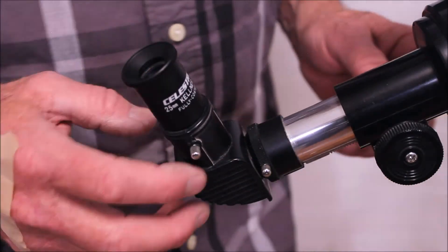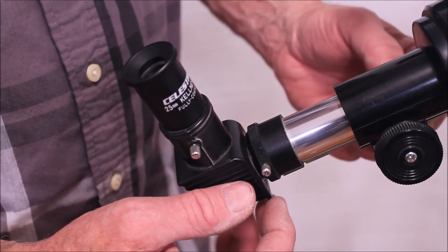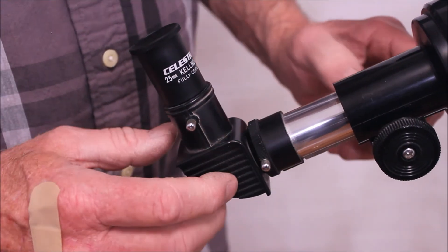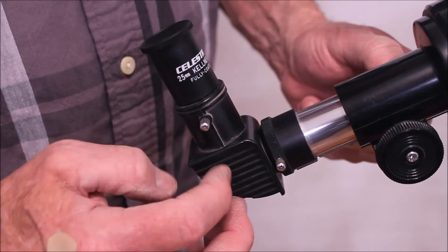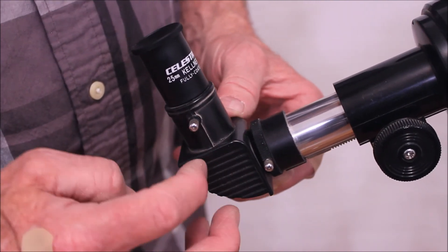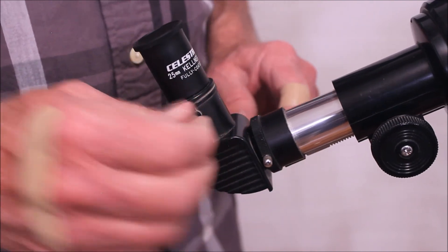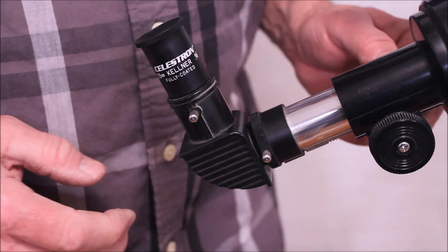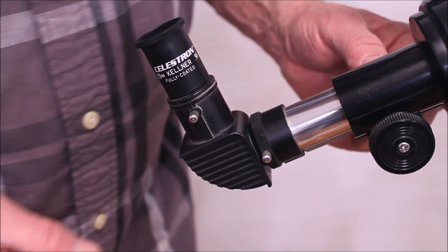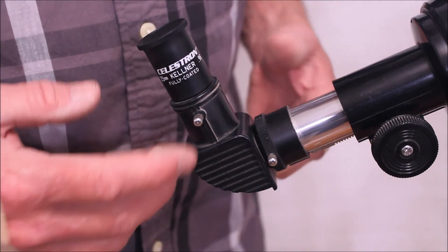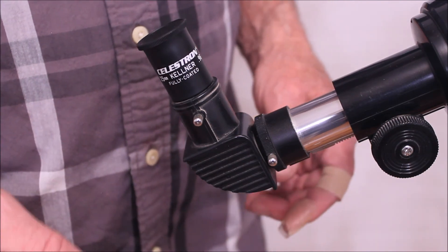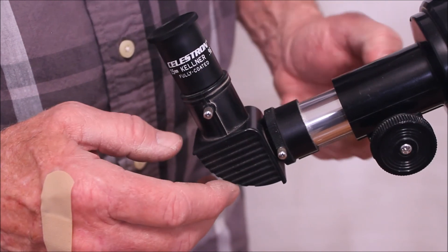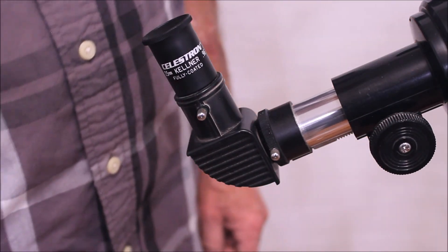This scope comes with a 965 focuser, and there's no way to change that without changing the whole focuser. You can buy a hybrid diagonal to use inch and a quarter in here. Oddly enough, with this little diagonal on the Celestron eyepiece, Celestron, it's a pretty nice eyepiece. It's low power, pretty low power. But it's not bad. It's not bad. If you happen to have a good quality set of 965 eyepieces, the diagonal actually works pretty well. The focuser is not so bad. It could be a lot worse than all this.